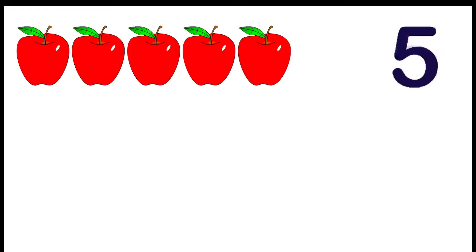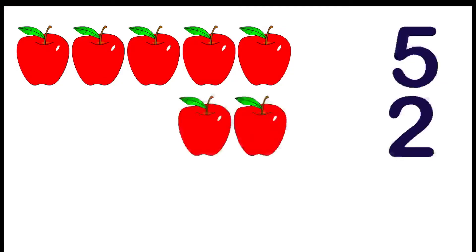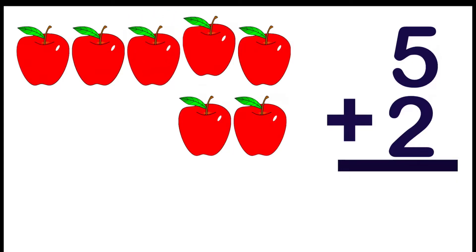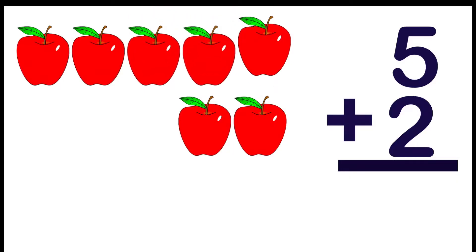Gino had 5 apples. He got 2 more apples. How many apples did Gino have in all? In order to find the answer, we need to combine 5 and 2 by adding them. So, let's count all the apples: 1, 2, 3, 4, 5, 6, 7. So, Gino got 7 apples.